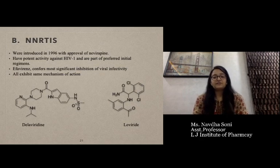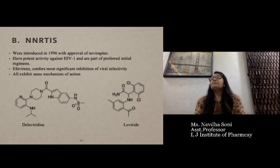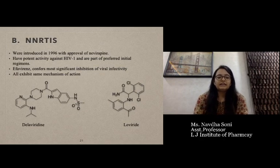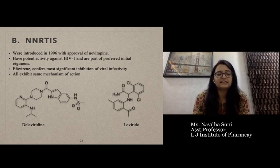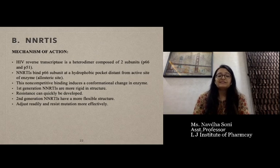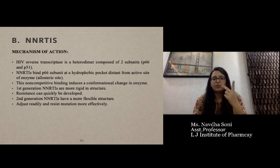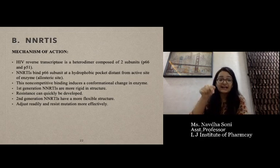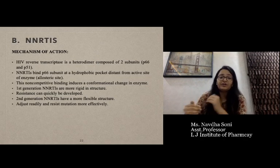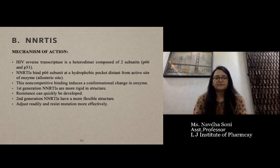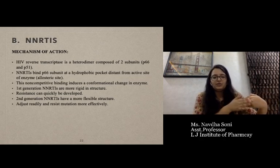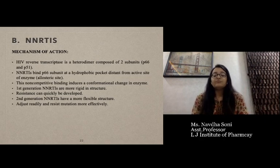Non-nucleoside reverse transcriptase inhibitors were introduced in 1996 with the approval of nevirapine, potent against HIV-1. Delavirdine and loviridine are examples, and all exhibit the same mechanism of action. They also inhibit reverse transcriptase. HIV reverse transcriptase is a heterodimer composed of two subunits: P66 and P51. NNRTIs bind with the P66 subunit at a hydrophobic pocket distinct from the active site of the enzyme. This non-competitive binding induces a conformational change in the enzyme. They are among the most potent drugs.